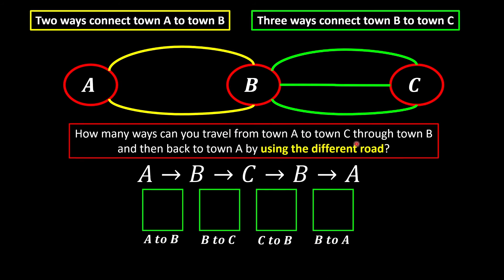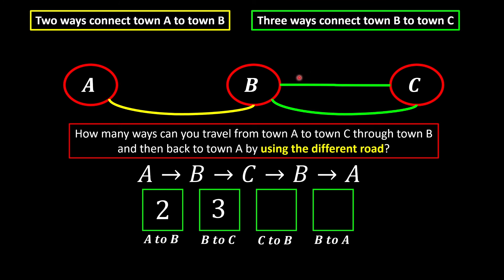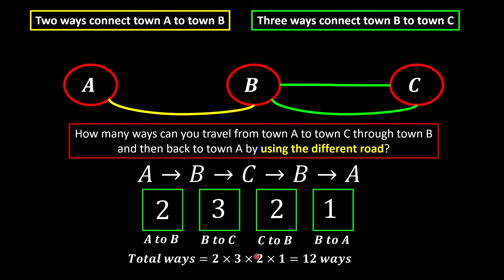Now let's change it: when going home you cannot use the same road you used before. From A to B we still have two ways, and from B to C we still have three ways. But on the return, since you can't reuse any road you've already taken, each used road is removed from the choices. From C to B we're left with two choices, and from B to A only one choice remains. So altogether: 2 × 3 × 2 × 1 = 12 ways.